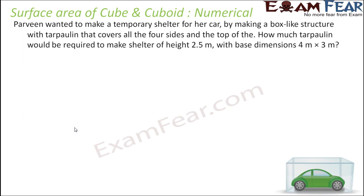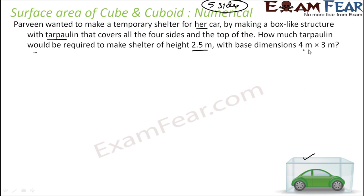Praveen wanted to make a temporary shelter for her car by making a box-like structure with tarpaulin that covers all 4 sides and the top. So she is looking to cover 5 sides only. The dimensions are: height = 2.5 metres and base dimensions = 4 m × 3 m.